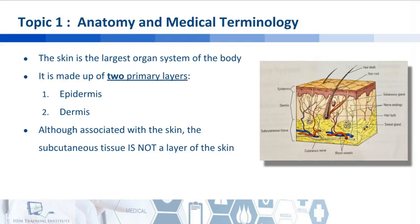The skin is the largest organ system of the body. It is made up of two primary layers: the outer epidermis and the inner dermis. And although you see there on screen, part of the drawing is the layer called the subcutaneous tissue. The word itself is indicative of what it means because the epidermis and the dermis together is called the cutaneous tissue. So subcutaneous means under the cutaneous tissue, or under the skin.